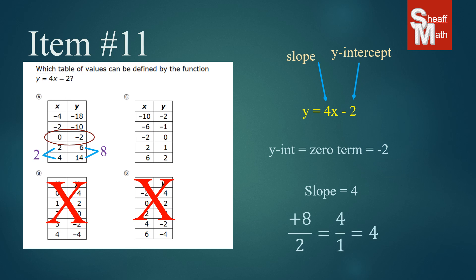So we can see that not only does A have the y-intercept, but it also has the slope. And so A is the correct answer.